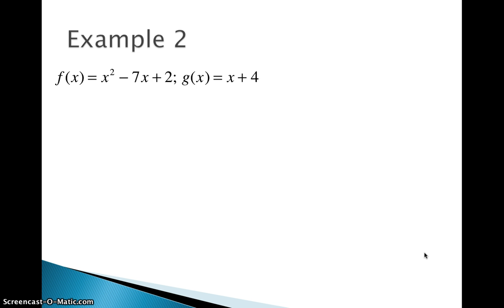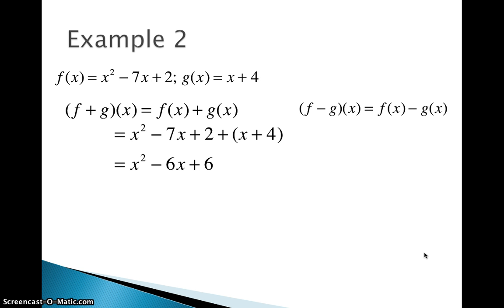We'll look at another example. A little bit more complicated because I threw a quadratic your way. So f of x equals x squared minus 7x plus 2. And g of x equals x plus 4. So we'll add first. We take our f of x rule and we combine it with the g of x rule. Combining like terms gets us x squared minus 6x plus 6. We subtract x squared minus 7x plus 2 minus the quantity x plus 4. But then we have to distribute that negative sign into all of g of x. So we get negative x minus 4 now. And then when we combine like terms, we get x squared minus 8x minus 2.